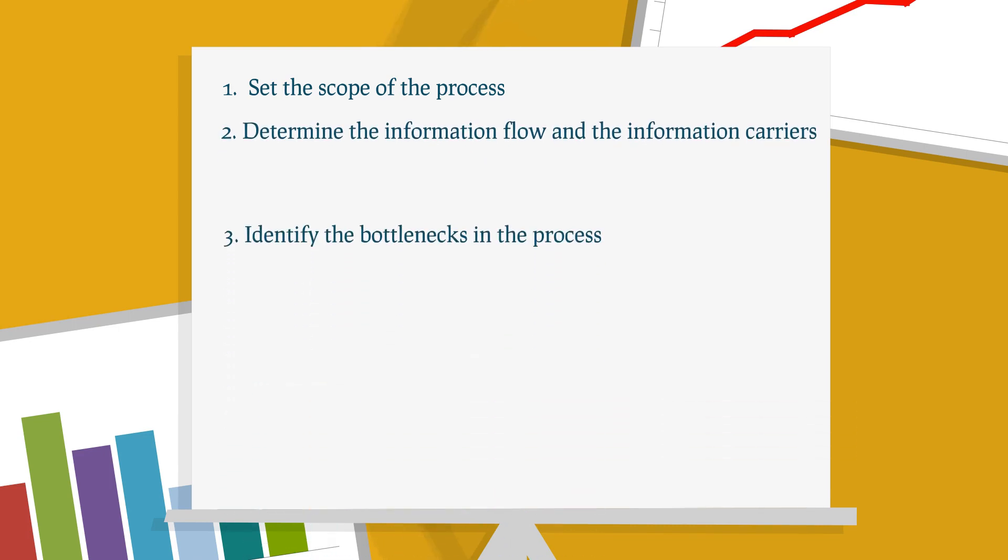Step-by-step plan for a makigami diagram: 1. Set the scope of the process. 2. Determine the information flow and the information carriers. 3. Identify the bottlenecks in the process. 4. Determine your quick wins.